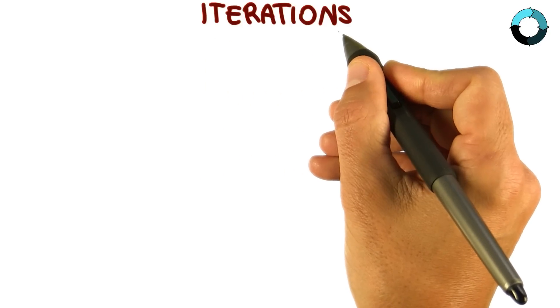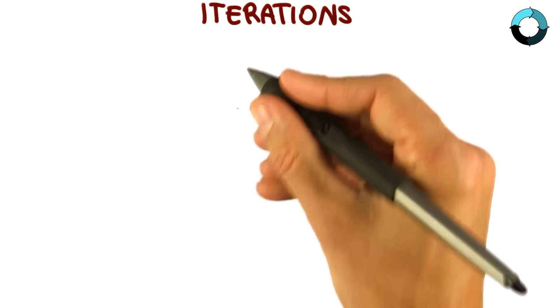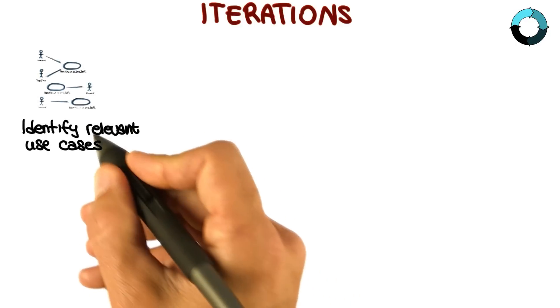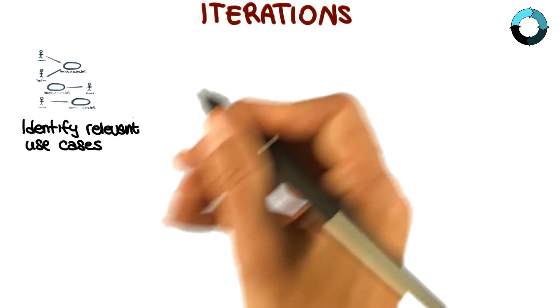So what happens exactly within an iteration? In almost every iteration, developers perform the following activities. They identify which pieces of functionality this iteration will develop and implement.